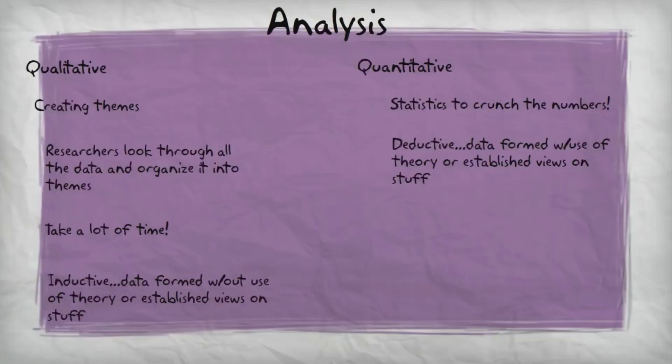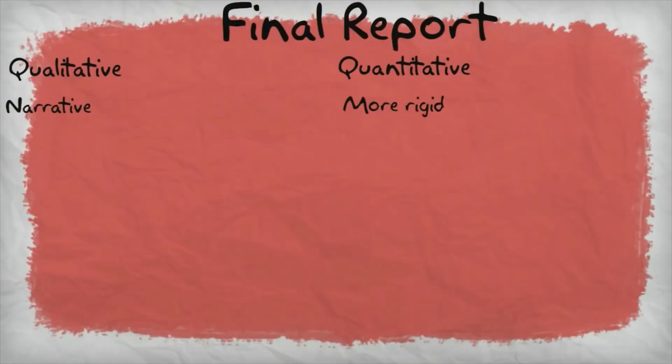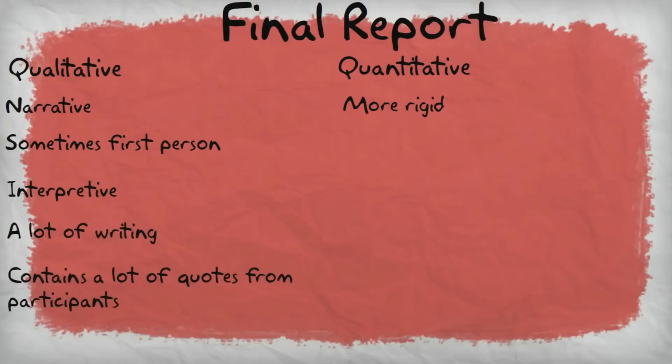Let's talk about the final report. In qualitative research, the final report is usually narrative in nature. The authors will sometimes write in the first person. It's more interpretive and it contains a lot of writing and it has direct quotes from participants. The final reports for quantitative research are more rigid in form and it's more in the form of a statistical report.